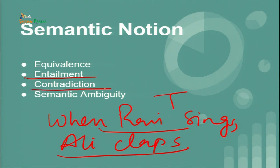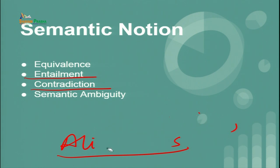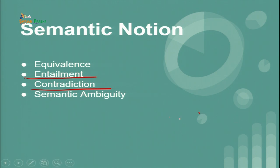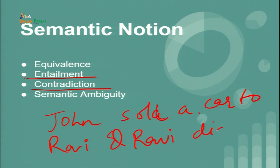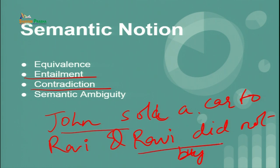There is also contradiction. In contradiction, two separate entities contradict each other. For example: 'John sold a car to Ravi' and 'Ravi did not buy.' Two sentences A and B are in contradiction when, whenever A can be used truthfully to describe a situation, B cannot be used truthfully, and whenever B can be used truthfully, A cannot.